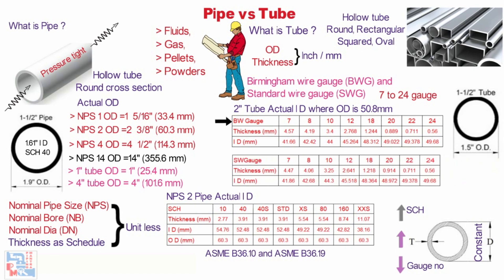Now let's look at the second table showing variation based on standard wire gauge. For SWG 7, tube thickness is 4.47 mm giving an ID of 41.86 mm. For SWG 22, thickness is 0.711 mm giving an ID of 49.378 mm. If you compare the two tables, you'll notice that after gauge value 22, for both BWG and SWG, the ID of the tube becomes the same in both cases — dimensions start to match after 22 gauge. These table dimensions are based on seamless tubes according to standard ASTM A450/A450M.